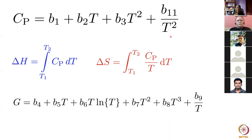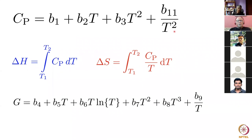You represent the heat capacity empirically because it varies in a complicated way with temperature, and you can't have that complication when doing generic calculations. This polynomial represents heat capacity as a function of temperature with fitting constants, and you can use several of these polynomials to cover the entire temperature range.